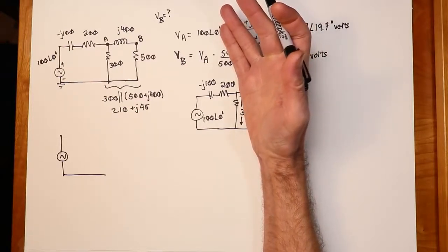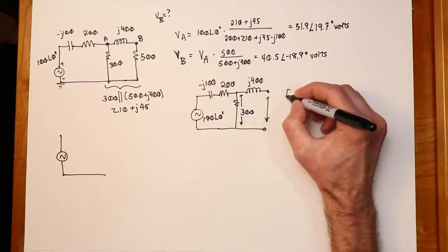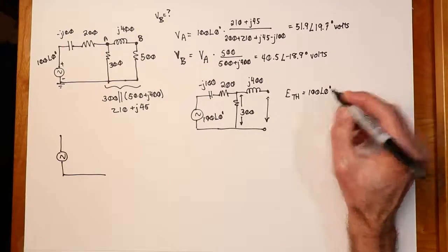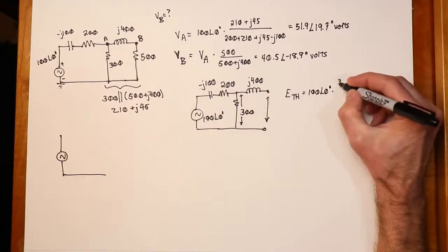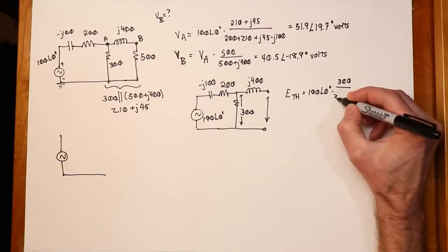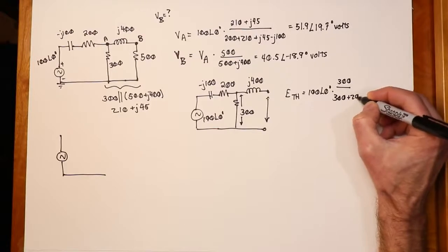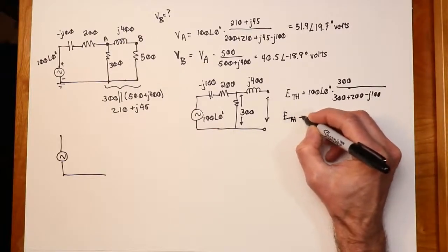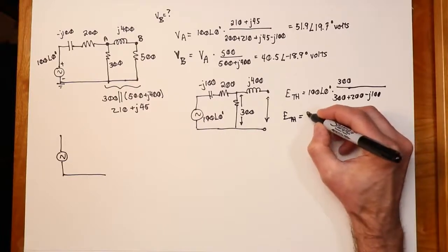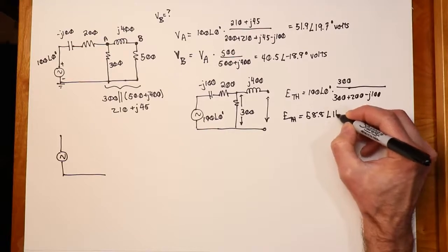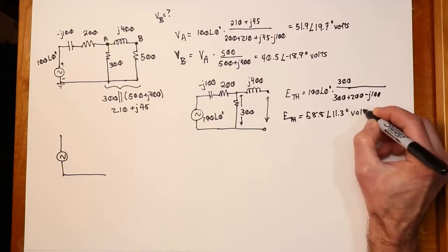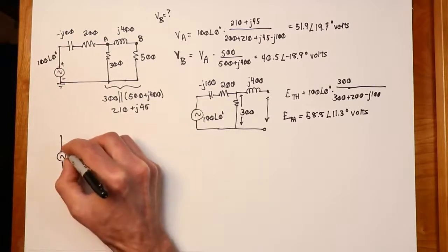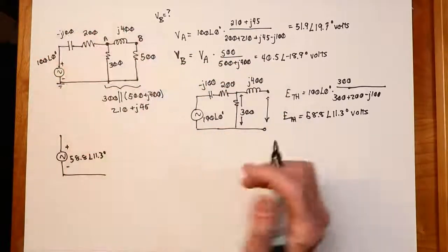So the E Thevenin will be my 100 volts times the divider that I see over here, which is going to be 300 divided by 300 plus 200 for the reals -j100 on the cap. So our E Thevenin works out to 58.8 at an angle of 11.3 degrees. That's what I have over here. Maintain that reference polarity that we have.